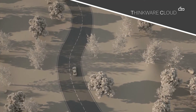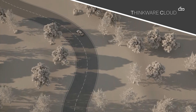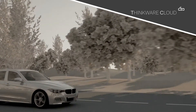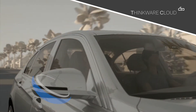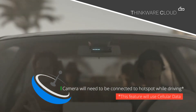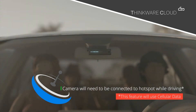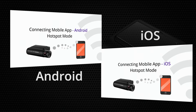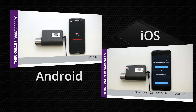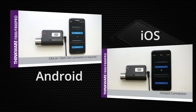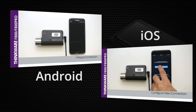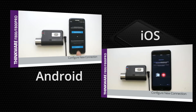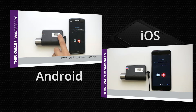For the F800 Pro to send the driving impact video notification and video clips to the Thinkware Cloud, the camera will need to be connected to the hotspot while driving. To connect the F800 Pro to a hotspot using a mobile device, you can follow these tutorials. Or you can connect the F800 Pro to a mobile hotspot device by following the tutorial here.